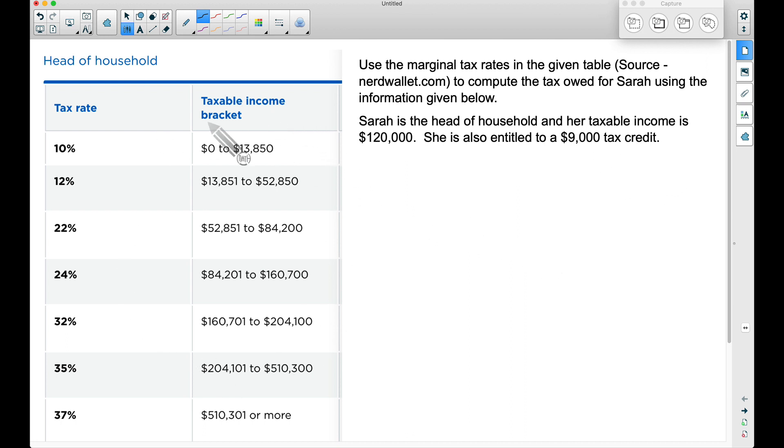So using this table over here, for the first $13,850 that Sarah has of taxable income, she will have to pay 10% of that. Since she clearly made more than $13,850, she's going to pay the full 10% of that first $13,850. To do that quickly, we can take 10%, I'm just going to use a decimal here, of means multiply, and let's do the complete $13,850.